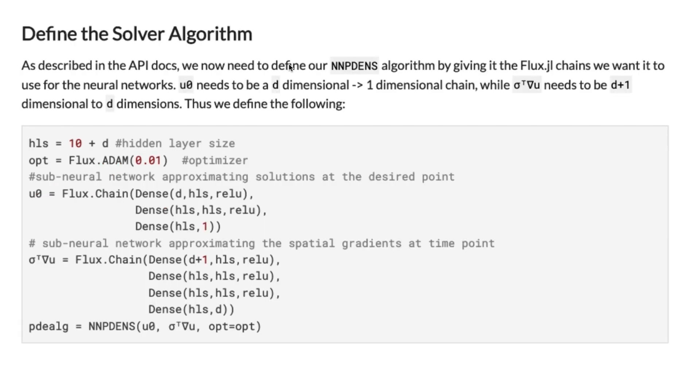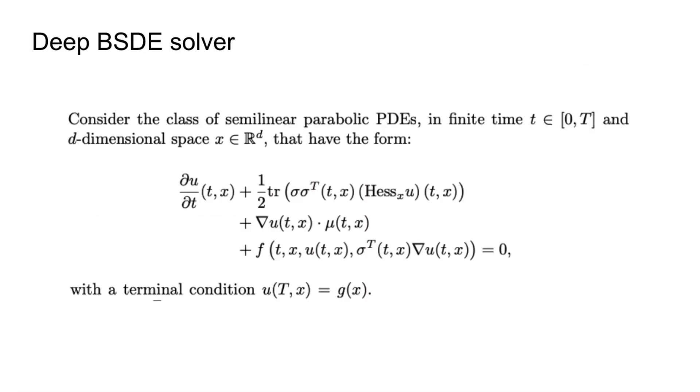The next step is to define the solver algorithm. First, we need to initialize neural networks. It's two sub neural networks: first is u0, which is actually an approximation for our solution, and the second neural network is an approximation for the gradient. If we come back to the general form, we have this part and this part we approximate with neural networks.